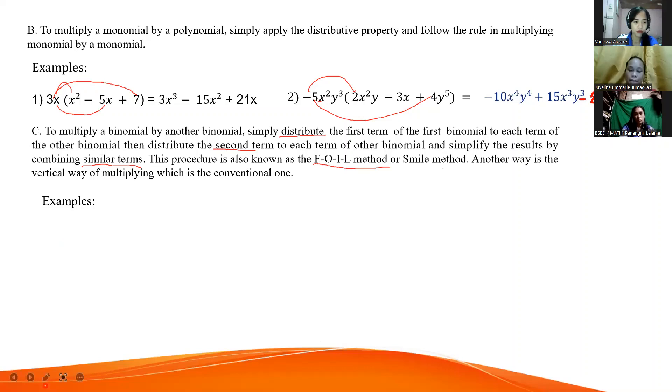For example, x plus 3 times x plus 5. The first terms are x and x. Next is outer term. Outer means outside. The ones we'll pair are x and 5. Very good. But before that, x times x, the answer is x squared. Next, the outer term. Our outer term is x and 5. X times 5, the answer is 5x. Very good, John.